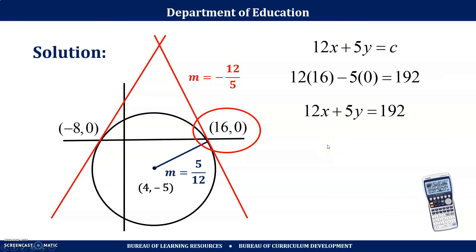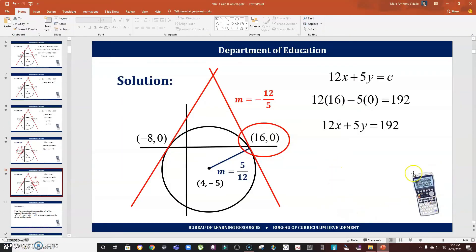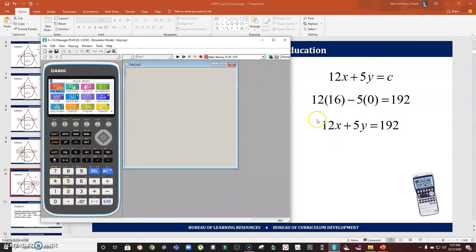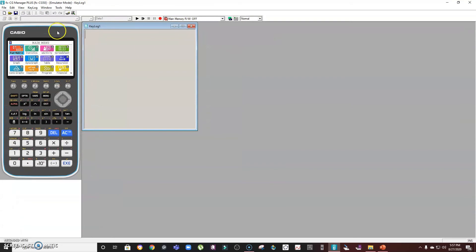That's how we answer the problem manually. Now, since this was given during a training on how to use a calculator, some of you are curious how to solve it using the calculator. The calculator used during the training was the Casio fx-9860G II. Since I don't have the emulator for that one, I'm going to use a similar but more advanced unit: the Casio fx-CG50.